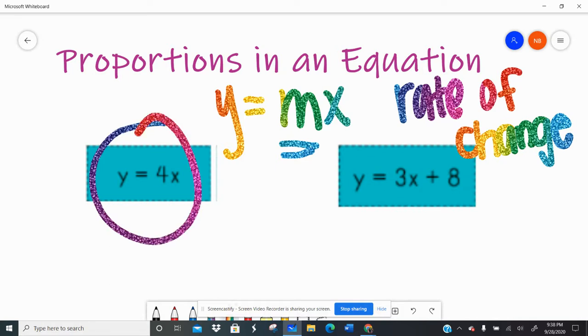So y equals mx, right? So if I look at these two equations, only one of them follows that formula. This is y equals 4x, right? So it's kind of like the common multiplier is 4. But if I look at this one over here, y equals 3x plus 8. If I have that plus 8, I'm not going through the origin if I were to graph this. So that is not a proportional relationship.